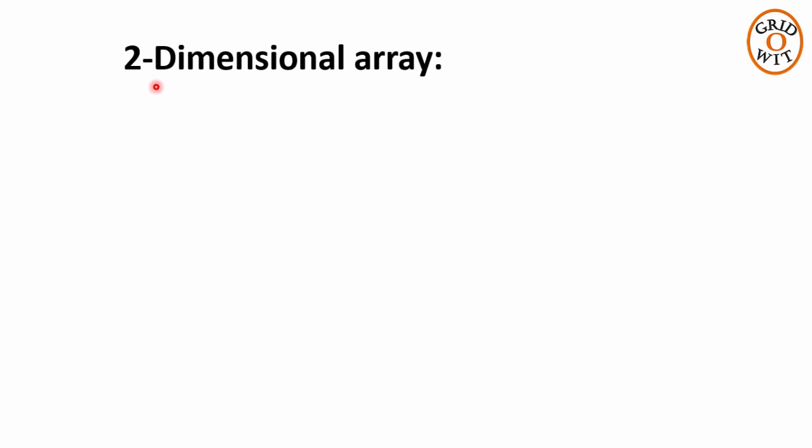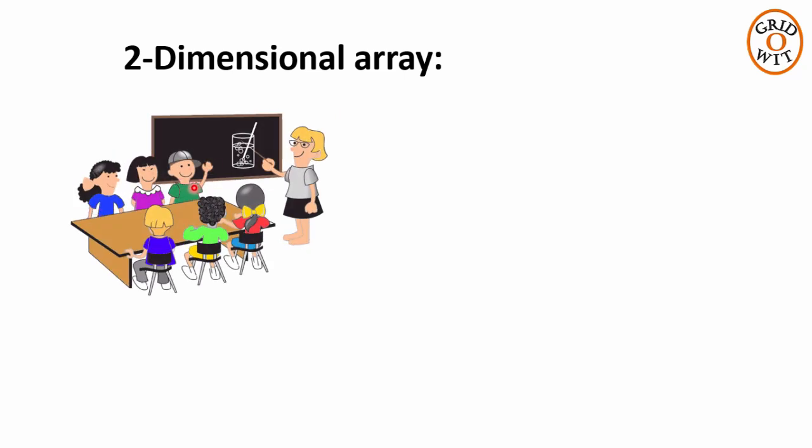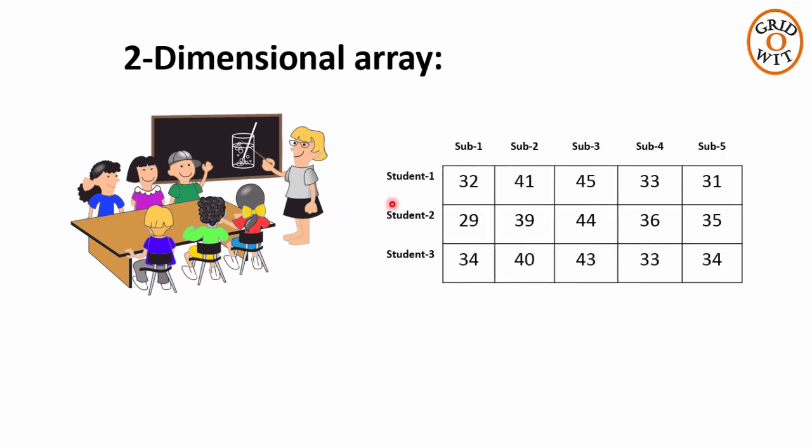Now let us see what is 2D array, when we will require 2D array and what is its syntax. We will understand this with an example. Consider a situation when you want to store the marks of all the students in a class. Then in that case, you can store in 2D array. Rows represent the students and columns represent the subjects. And the value represents the marks of a particular student in this particular subject.